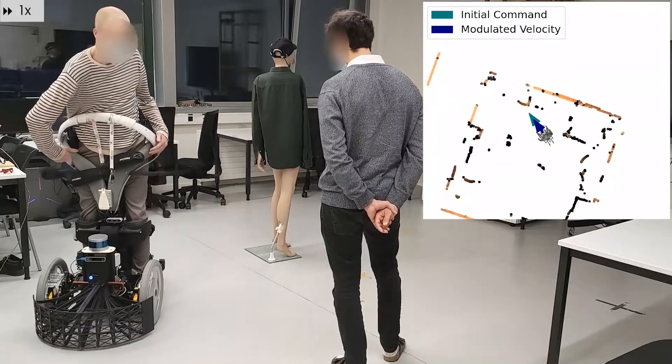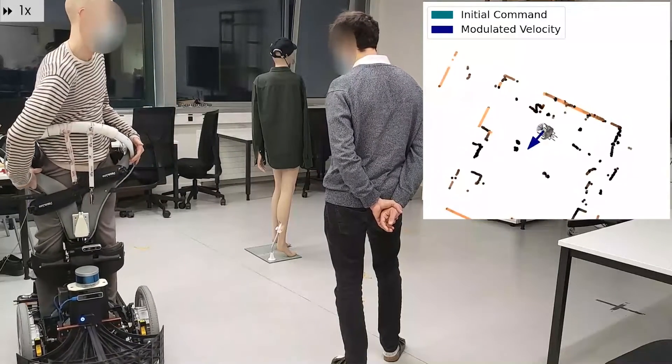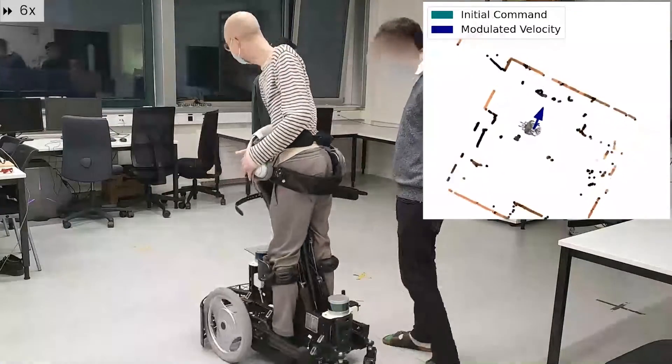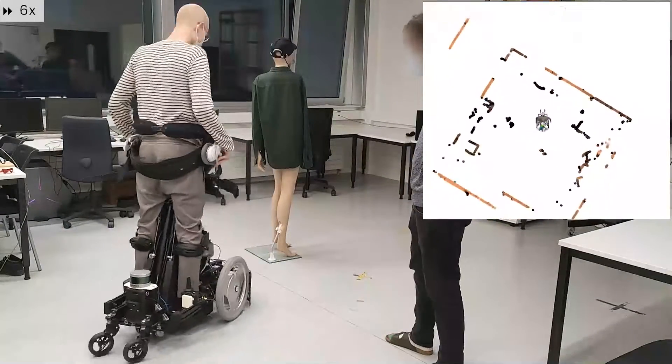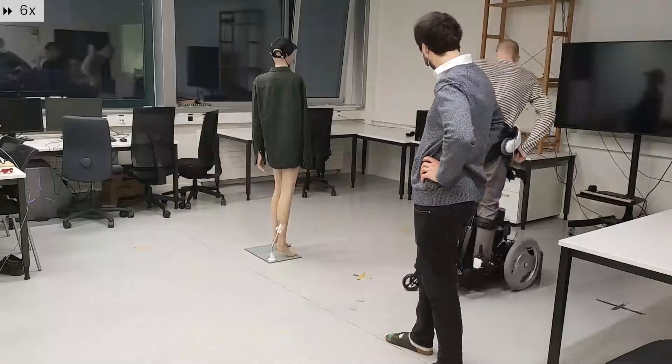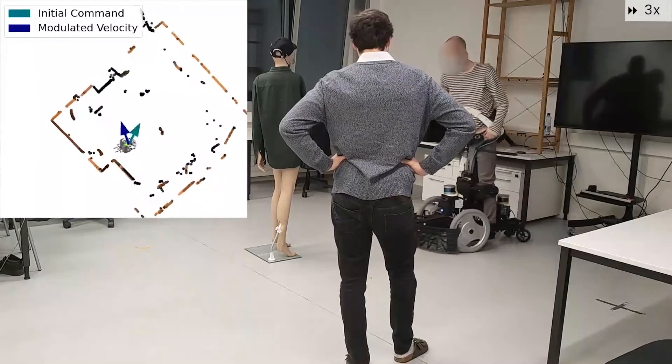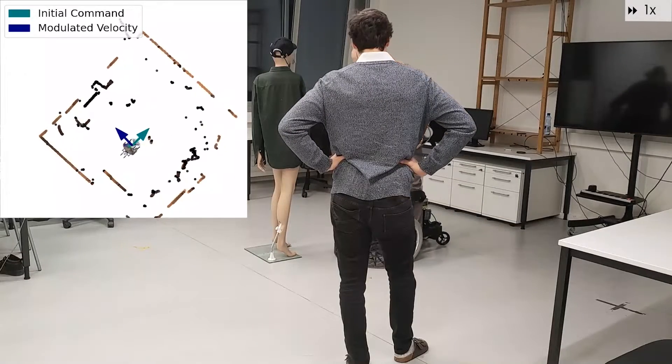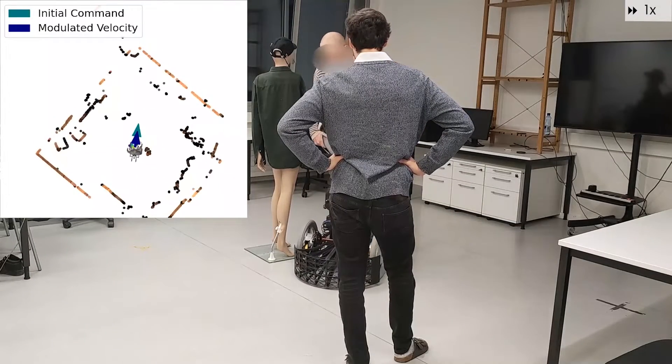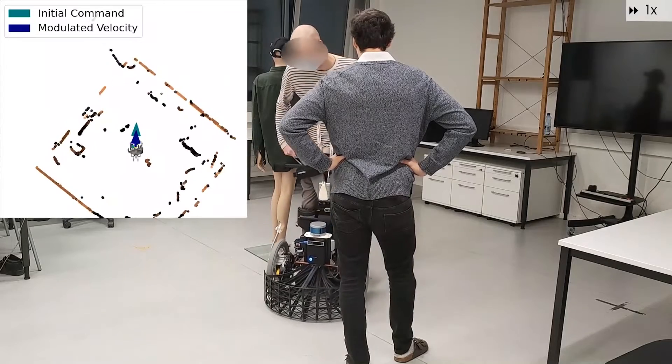The algorithm is evaluated with the standing wheelchair Qolo. The initial blue velocity command is given by the operator. The present method updates the velocity in real time to obtain the green collision-free velocity. For this, it uses only the LiDAR measurement of the robot.